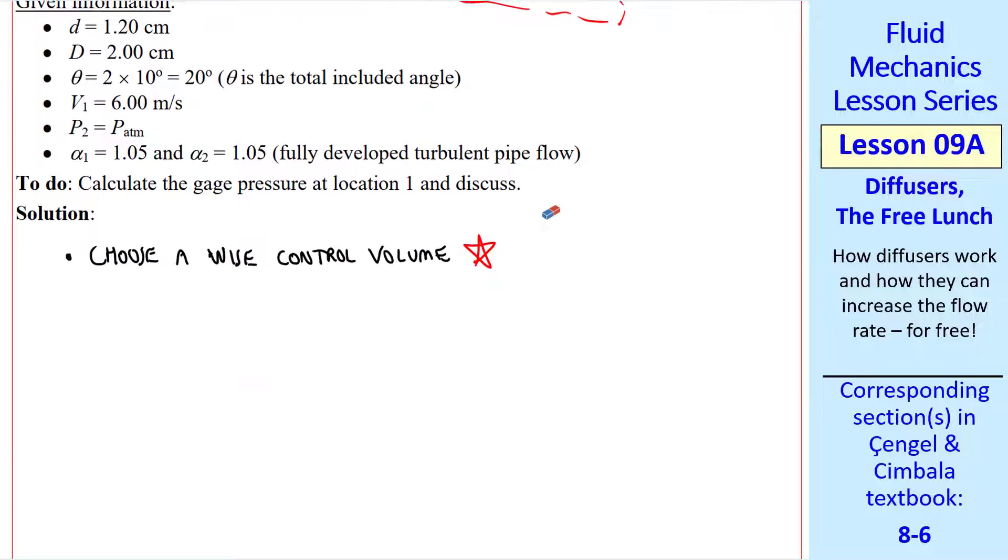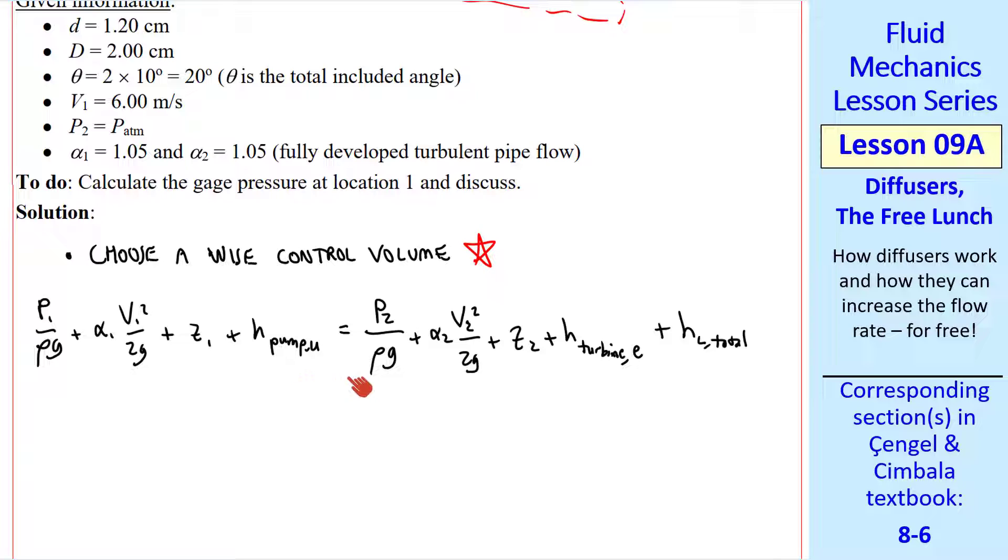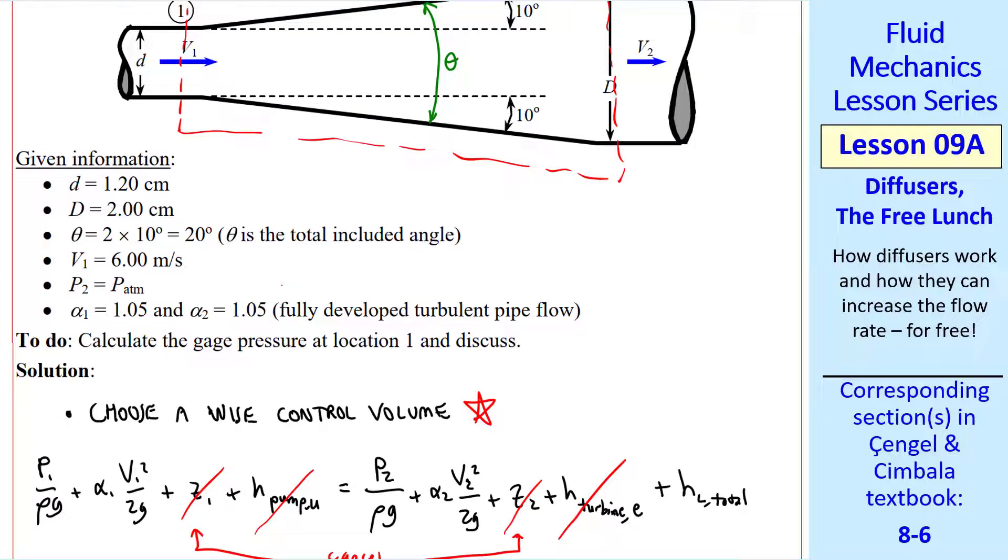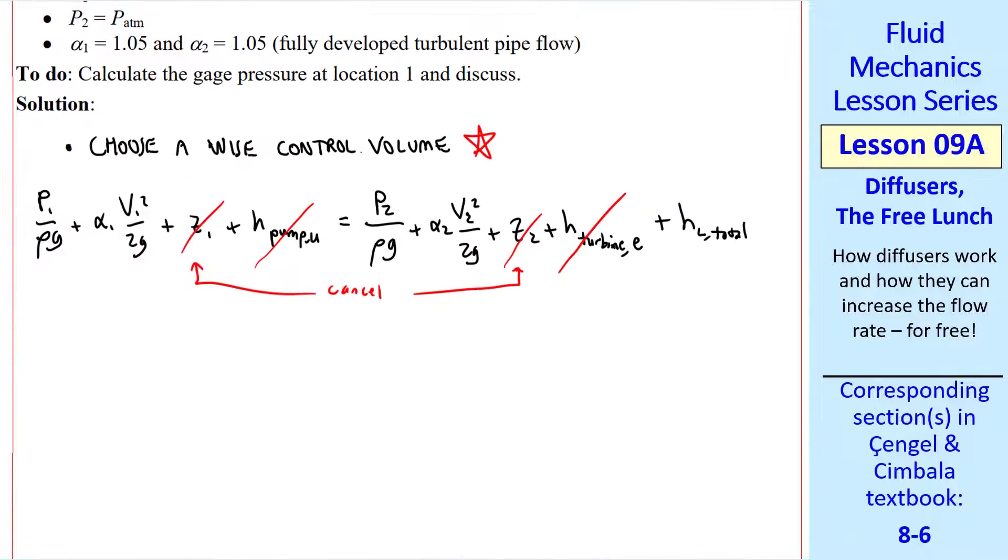Now we can write the energy equation. Here's our standard workhorse energy equation in head form. We simplify as much as possible. There's no pump. There's no turbine. And Z one is equal to Z two. Since this diffuser is horizontal.